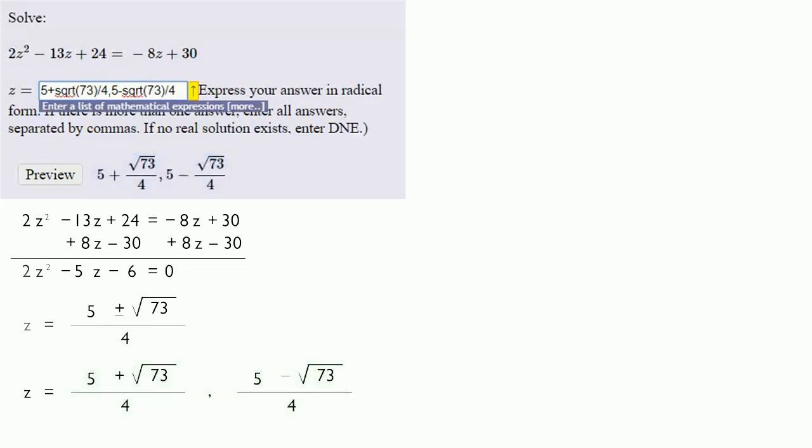And that's because this expression 5 plus the square root of 73, 5 minus the square root of 73, is the numerator of a fraction. So we'll have to enclose the numerator in parentheses. Nope, that's the entire fraction. We'll fix that. We'll put the numerator in parentheses.